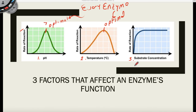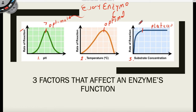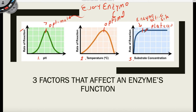Substrate concentration also affects the rate of the reaction. As the substrate concentration increases, so does the rate of the reaction — up to a certain point. Then it doesn't matter if you keep adding more substrate; the rate of the reaction is going to plateau. This is because there are only a certain number of enzyme active sites available to catalyze that reaction. After a certain amount of substrate has been added, if all those enzyme active sites are taken, then it doesn't matter how much more substrate you add — the chemical reaction is going to plateau.